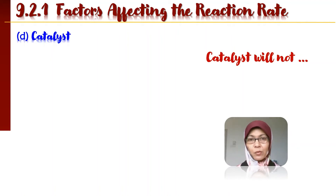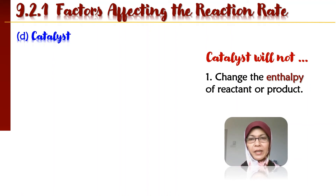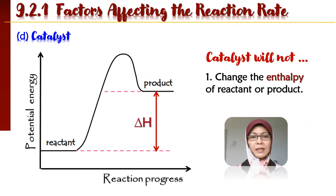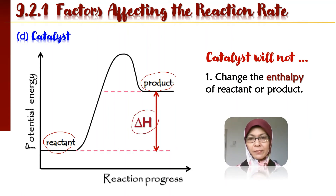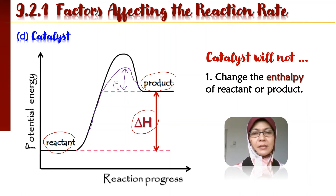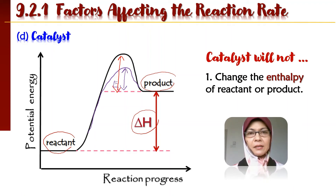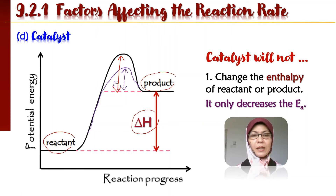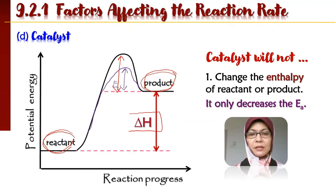Walaubagaimanapun, catalyst will not change the energy of reactant or product. Dia tidak akan mengubah tenaga reactant atau tenaga product, dan delta H tetap. Catalyst hanya ubah activation energy saja. Yang warna purple adalah activation energy dengan catalyst, dan yang warna merah adalah activation energy tanpa catalyst — catalyst hanya merendahkan activation energy sahaja. Ia tidak akan mengubah tenaga reactant ataupun tenaga product. Which means delta H is not affected by catalyst.